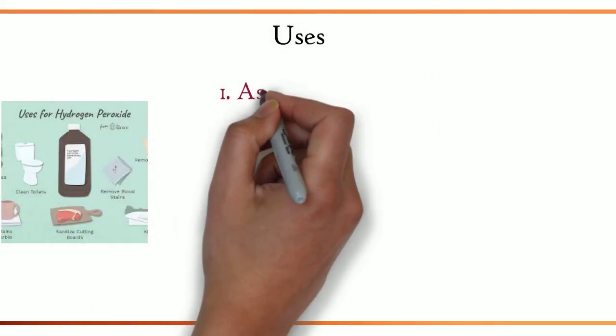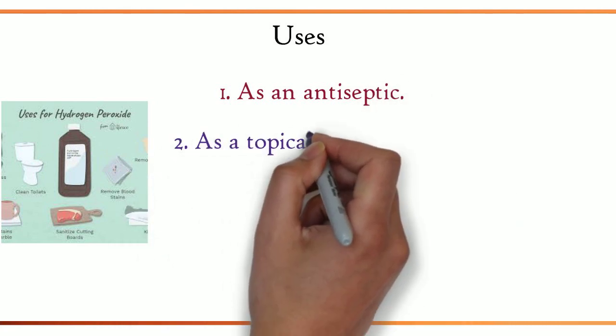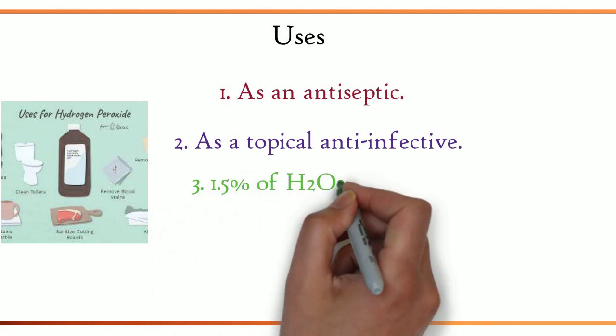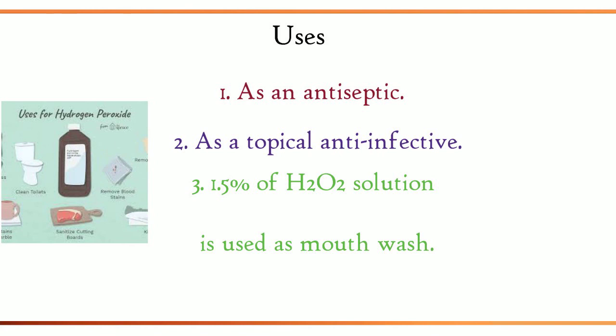Then uses of hydrogen peroxide. 1. As an antiseptic. 2. As a topical anti-infective. 3. 1.5% of H2O2 solution is used as mouthwash for useful in cleaning wounds.